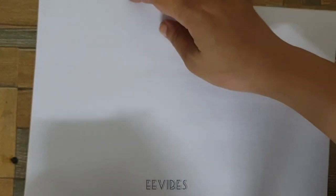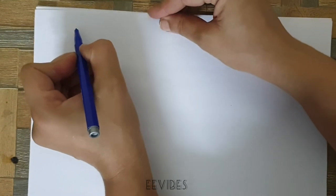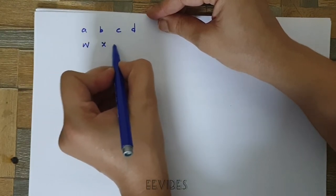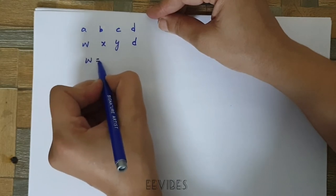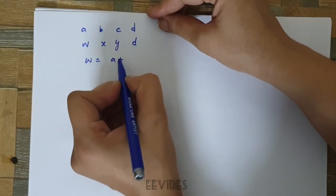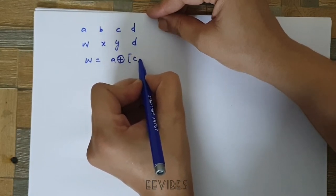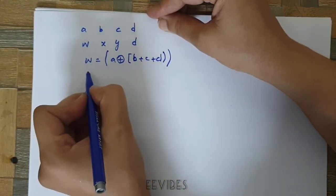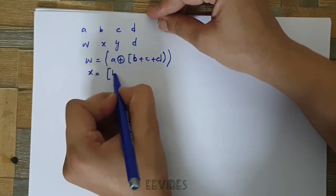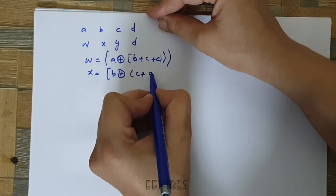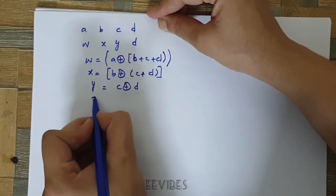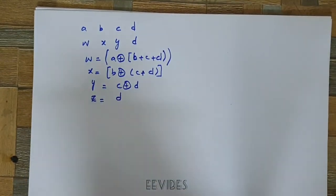Writing all the simplified expressions together: for four input variables A, B, C, D and output variables W, X, Y, Z — W = A XOR (B + C + D), X = B XOR (C + D), Y = C XOR D, and Z = D. These are the four Boolean functions implementing the four-bit two's complementer circuit using XOR gates.